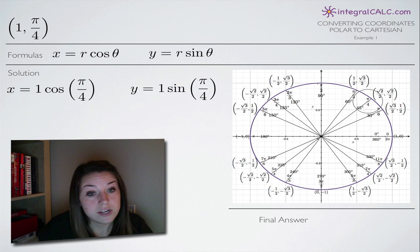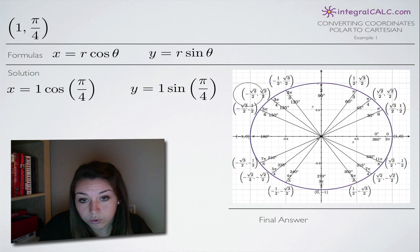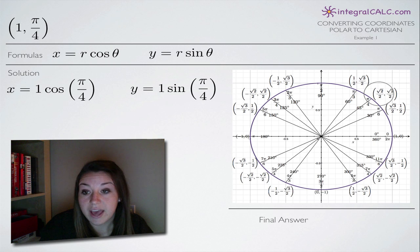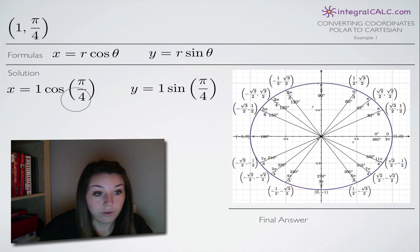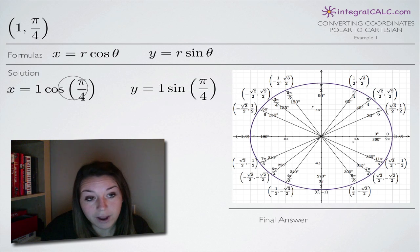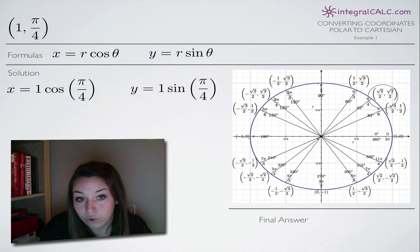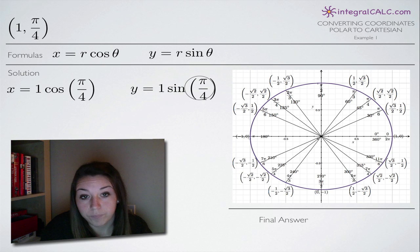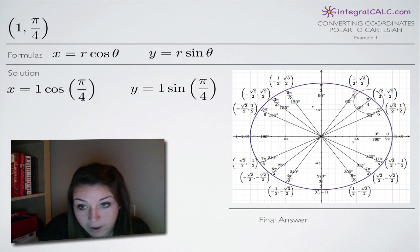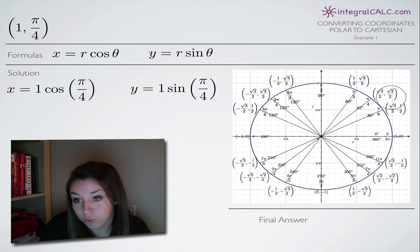When you're working with the unit circle, the thing you need to remember is that the Cartesian coordinates along the outside of the circle — the x term, in this case the square root of 2 over 2 — is representing cosine. So when we are looking for cosine of pi over 4, we find the angle pi over 4 and look at the x term. Similarly, we look at the y-coordinate at that point, which again is the square root of 2 over 2.